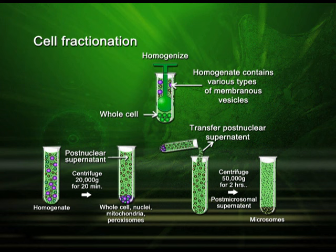Centrifuging the supernatant at 50,000 g for 2 hours results in microsomes settling down as the pellet. This is exactly what happens during differential centrifugation — the cell homogenate is subjected to centrifugation while slowly and steadily increasing the RPM and RCF.